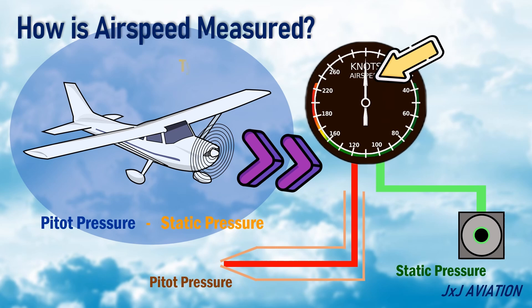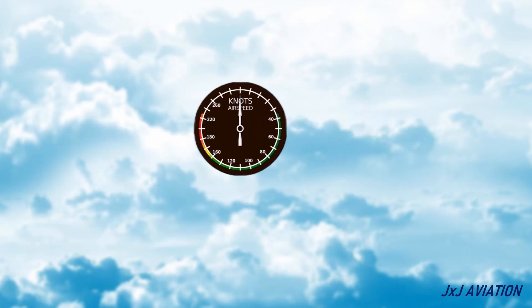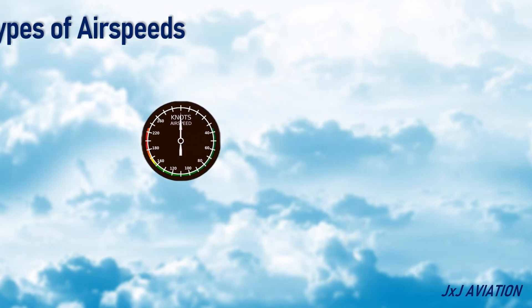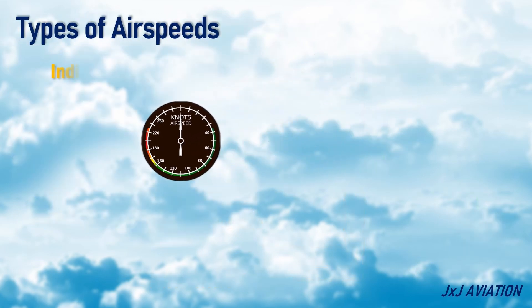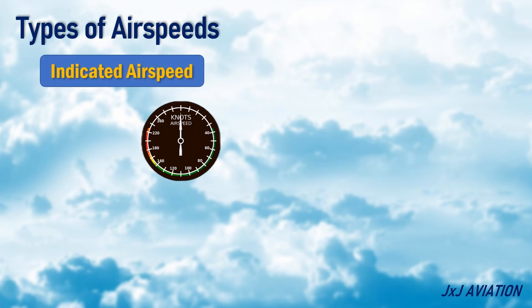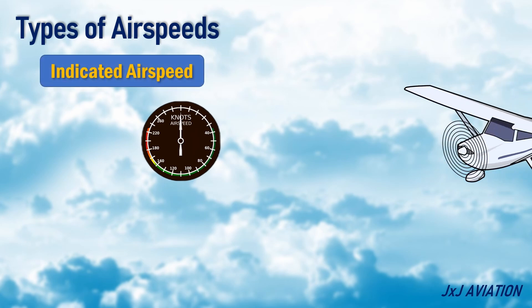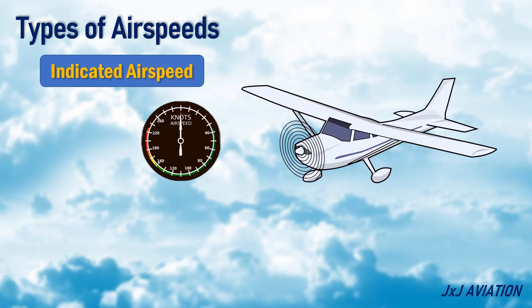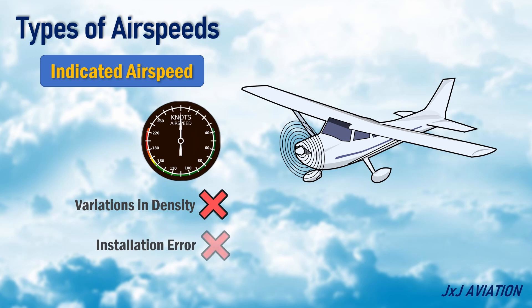Let's look at the different types of airspeeds. Indicated airspeed: the speed which is directly obtained from the airspeed indicator is called the indicated airspeed. This airspeed is not corrected for variations in density, installation error, or instrument error. This speed is used by manufacturers for determining aircraft performance.